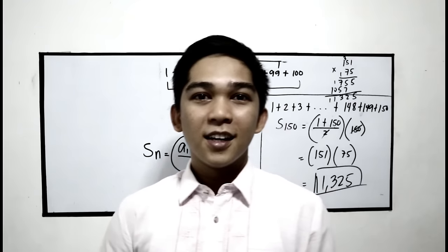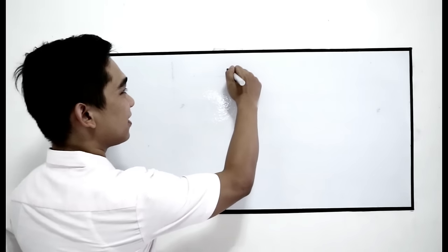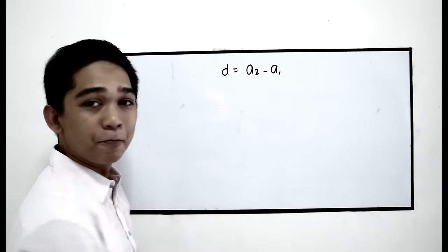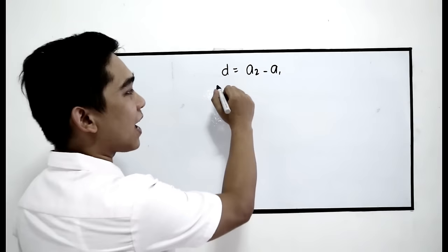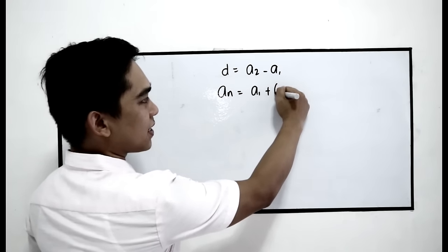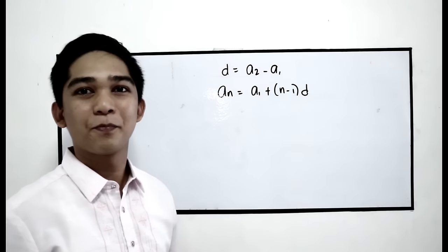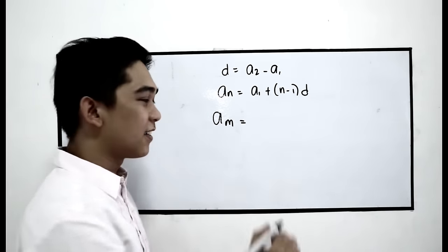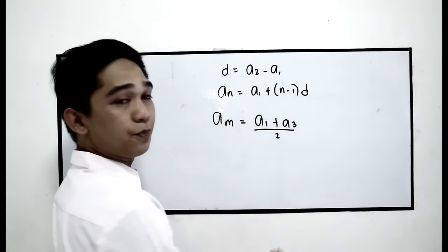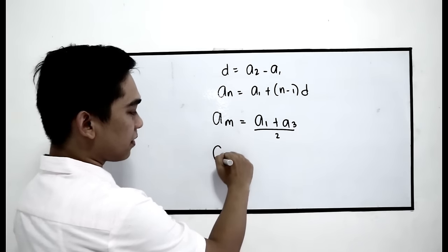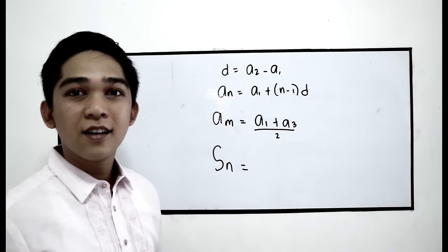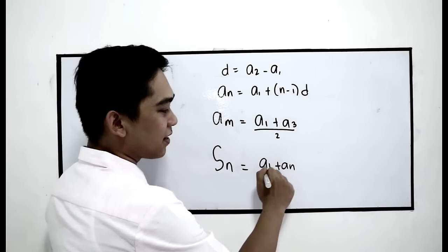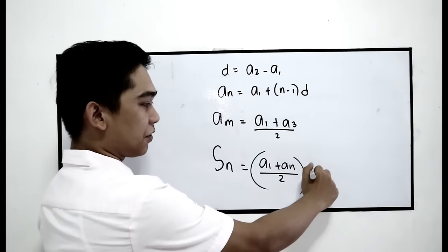So we are done with lesson 1. Under the arithmetic sequence, we have the formula for the common difference: a2 minus a1. For finding the terms: an is equal to a1 plus n minus 1 times the common difference. For the arithmetic mean: a1 plus a3 divided by 2. And for the arithmetic series, the Sn formula: a1 plus an divided by 2, times the number of terms n.